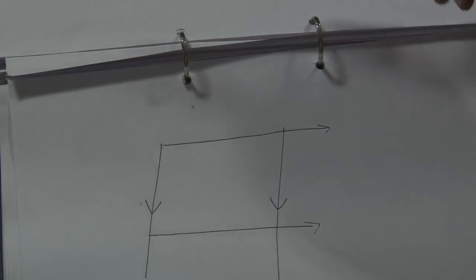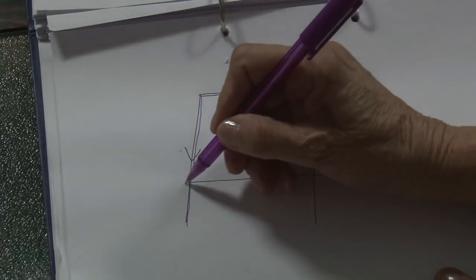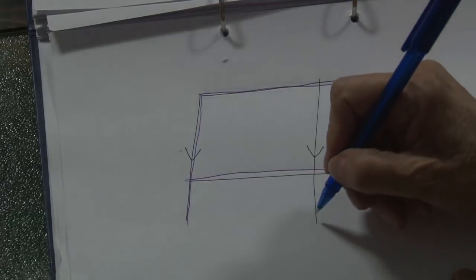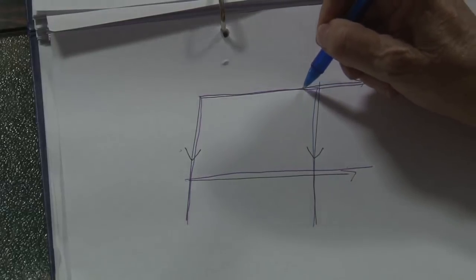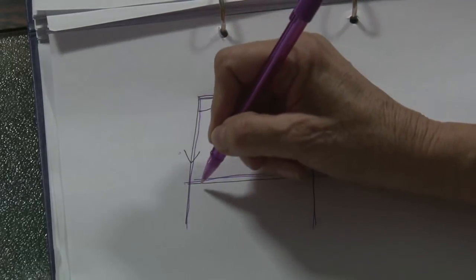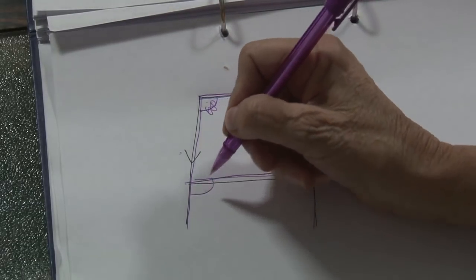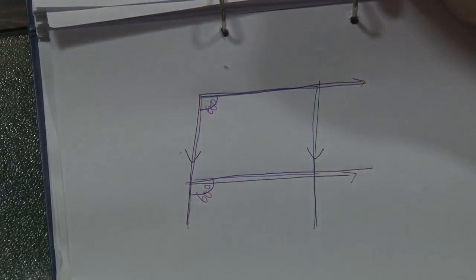There are four rules to know. The F stands for corresponding angles. If you look for an F in the diagram, you can see an F here, or an F looking to the other side. Corresponding angles are in matching positions — like underneath that line, underneath that line. So if this angle is 60 degrees, that one will also be 60 degrees. Those are called corresponding angles.